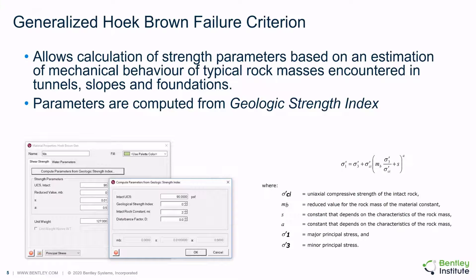The generalized Hoek-Brown failure criterion allows calculation of rock strength parameters based on the major and minor principal stresses. The method predicts strength envelopes of intact rock and is based on laboratory triaxial tests. It allows key parameters to be computed from a geological strength index that can be entered in a sub-dialogue from the main dialogue.